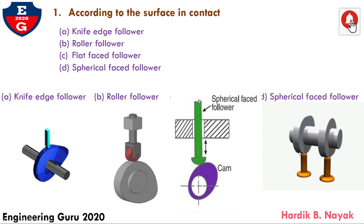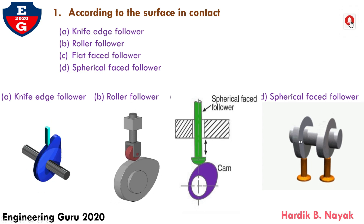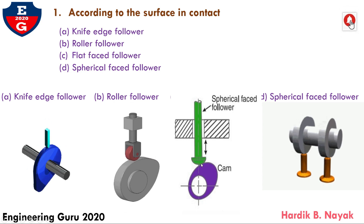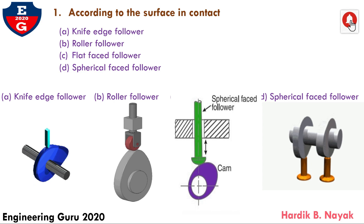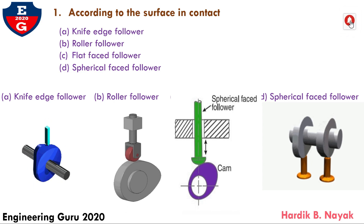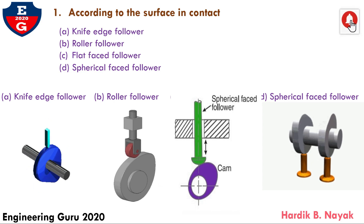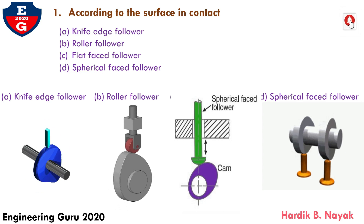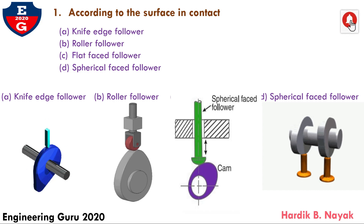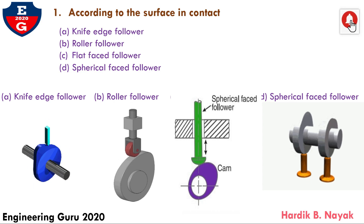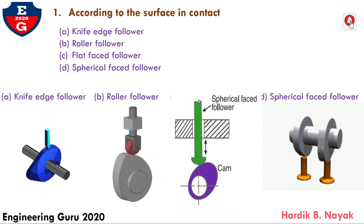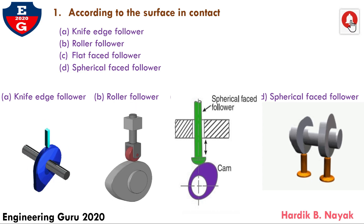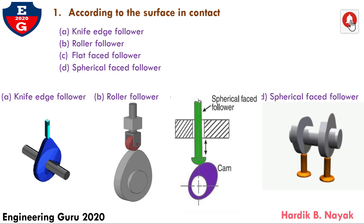And the final type is spherical face follower. Here we can see that this is the follower and this is the cam. Here the follower shape is spherical. When the contacting end of the follower is of spherical face, it is called a spherical face follower. It may be noted that when a flat face follower is used in automobile engines, high surface stresses are produced. In order to minimize these stresses, the flat end of the follower is machined to a spherical face.